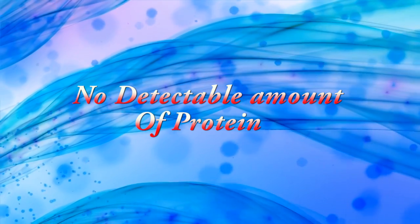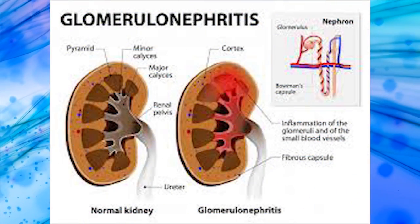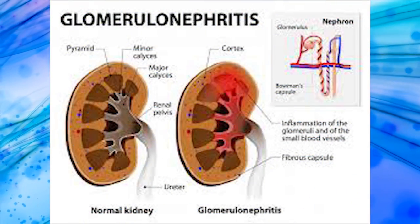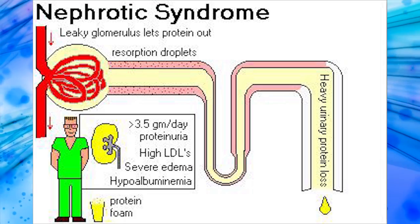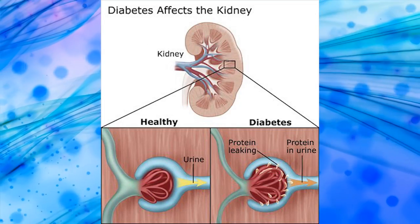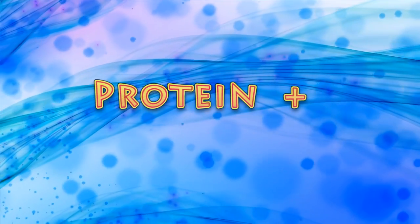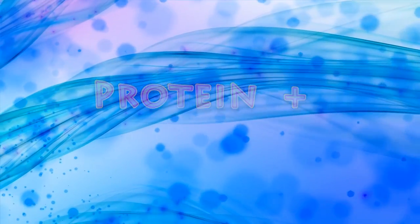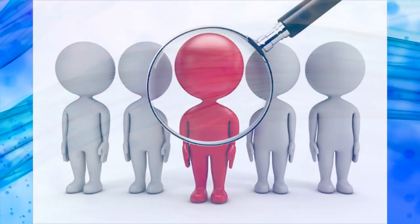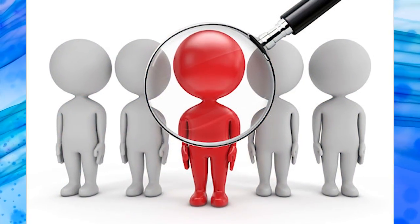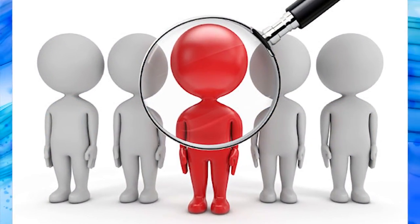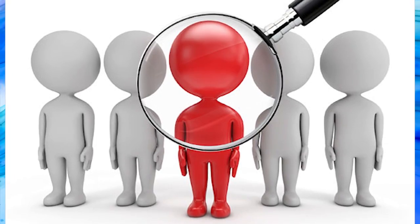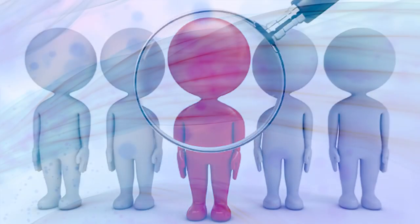But if present in some disease conditions like glomerulonephritis, nephrotic syndrome, or diabetic nephropathy, urine will test positive for protein. So, to identify these kinds of disease conditions, urine protein testing is really important.